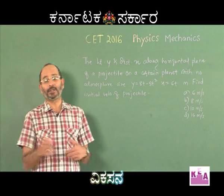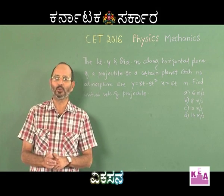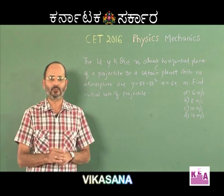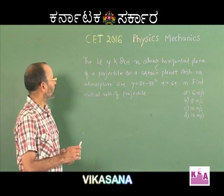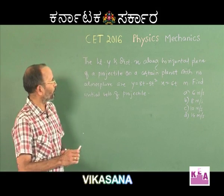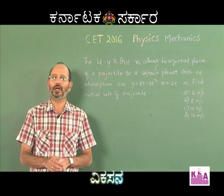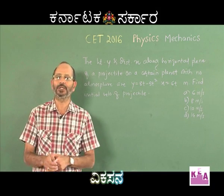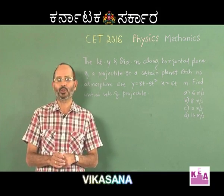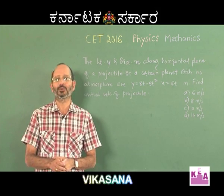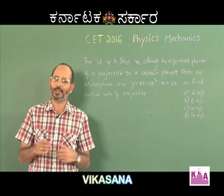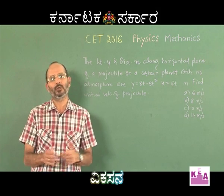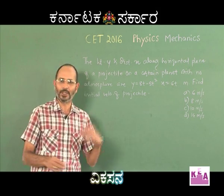The problem says it is a certain planet, so he has not told you which planet it is. We do not know the acceleration due to gravity there. The way in which the y coordinate and the x coordinate of the particle are changing with time have been expressed in terms of some functions. If you differentiate y with respect to t you get the velocity in the y direction, and if you differentiate x with respect to t you get the velocity in the x direction. Let me do that.